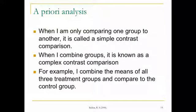So when I am doing this with one group to another, I call this a simple contrast comparison. But when I combine groups, it's called a complex contrast comparison. For example, I can combine the means of all three treatment groups and compare them to the control group. And say all treatment groups have a significant difference from the control group. This way, I'm only doing one post hoc test instead of doing a Tukey, which is six post hoc tests.